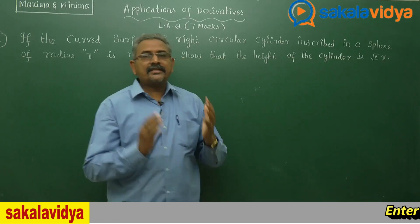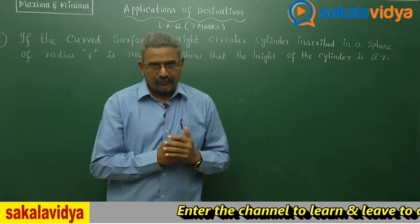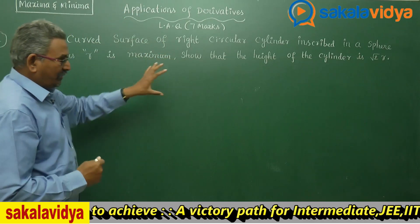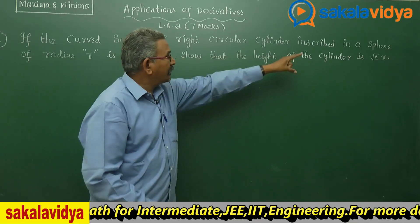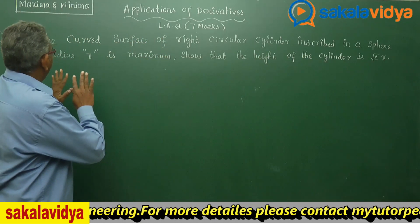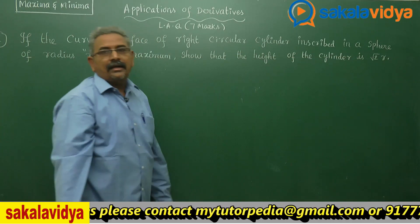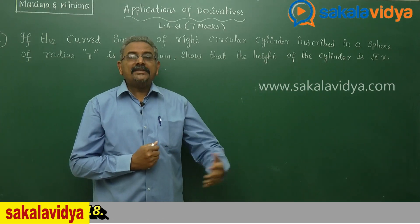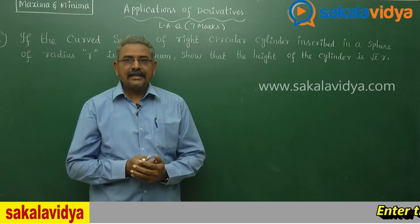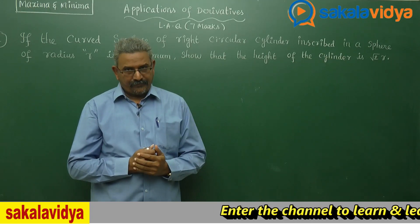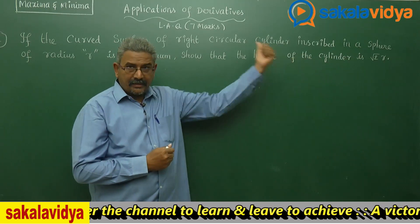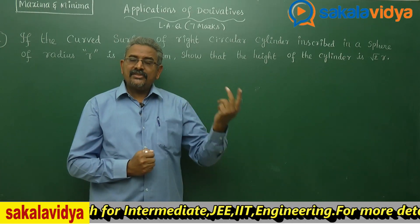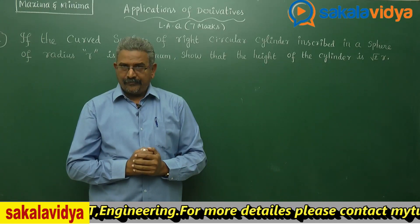So first let us make a plan — let us devise a plan. The sphere radius small r is given, but the dimensions of the cylinder are not provided. So let us assume capital R be the base radius of the cylinder and h be the height of the cylinder. Since sphere radius r is given, we treat r as constant, whereas h and capital R will be the variables.